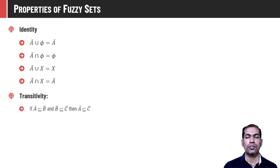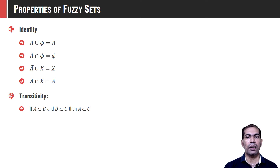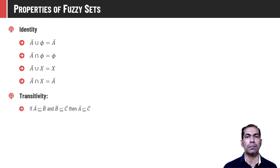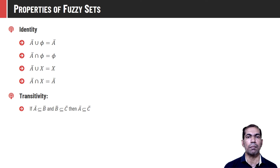Fuzzy sets also follow the property of transitivity — that is, if set A is a subset of B, and B is a subset of C, then A is also a subset of C, or we can say that A is contained in C.